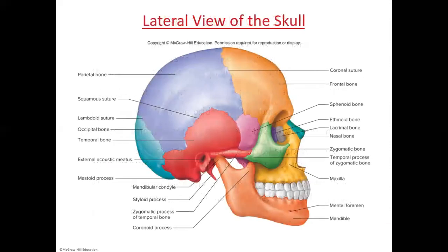Here's a lateral view of the skull. You can see the parietal bone is much larger than it looked in the previous picture. You have the occipital bone in the back, the temporal bone, your mandible down here, and your maxilla and nasal bone. You can't see the vomer in the middle. The sphenoid is here but goes towards the inside. Here's your zygomatic bone and your lacrimal bone, and you can see a little bit of the ethmoid bone there as well.